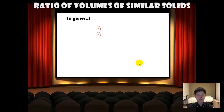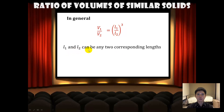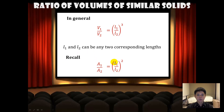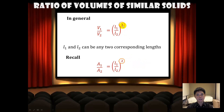In general, the ratio of the volume of similar solids can be given by the cube of L1 over L2, whereby L1 and L2 can be any two corresponding lengths. To recall, the ratio of the area of similar figures is given by A1 over A2 equals the square of L1 over L2. Note the difference in the power — it is not difficult to remember, since volume uses cubic centimeters and area uses square centimeters, so the powers resemble those units.